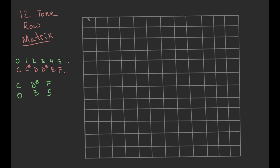To make a tone row matrix, you just take your tone row and put it at the top across the top. We're going to put numbers instead of actual letters — just remember that a five can be an F, an E-sharp, or a G double-flat; all of that is okay.